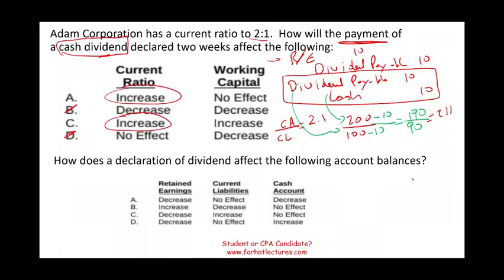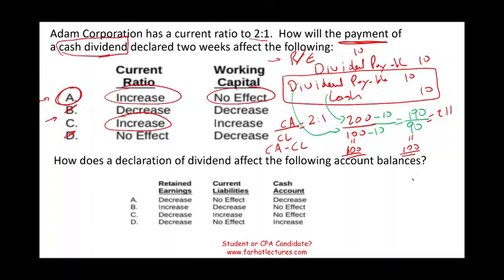What about working capital? Working capital is current assets minus current liabilities. Before the payment: 200 minus 100 equals 100. After: 190 minus 90 equals 100. Working capital was not affected — no effect. Therefore the answer is A. The key is knowing that if you reduce both current assets and current liabilities by the same amount, the difference stays the same. Current ratio increases, working capital has no effect. The answer is A.